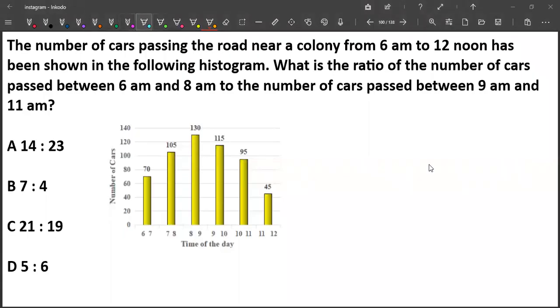Hi, let us solve this question. The number of cars passing on the road near a colony from 6am to 12 noon has been shown in the following histogram.